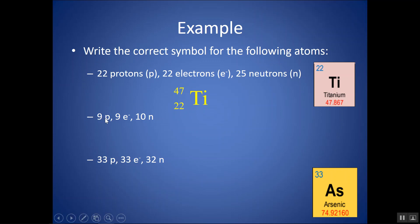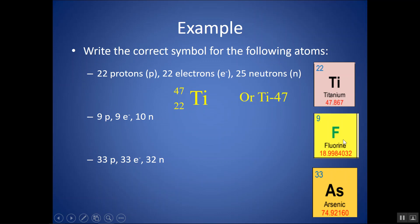Nine protons, nine electrons, ten neutrons — protons and electrons are equal because it's a neutral atom. Looking up atomic number nine, that's fluorine, F. Nine goes in the bottom left. For mass number, I add protons and neutrons: 9 plus 10 gives 19 in the top left. You can also write it as F-19.